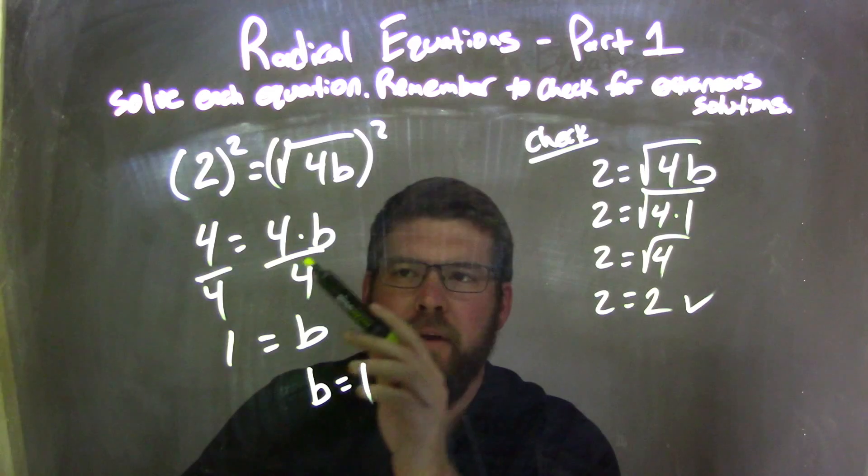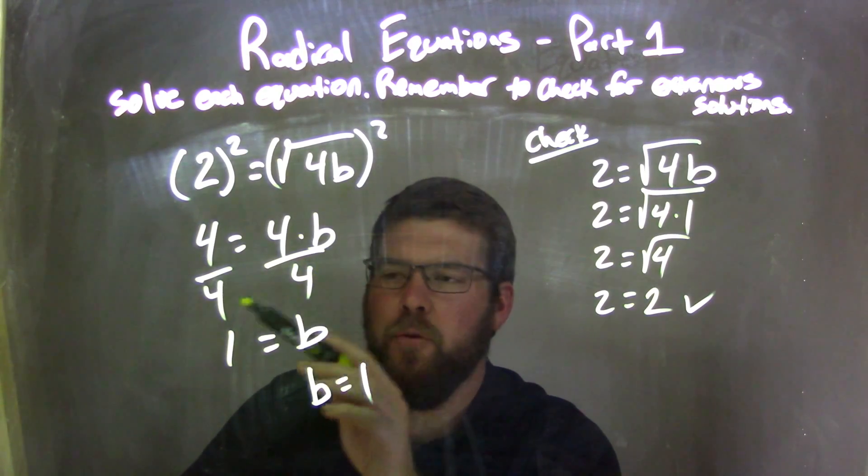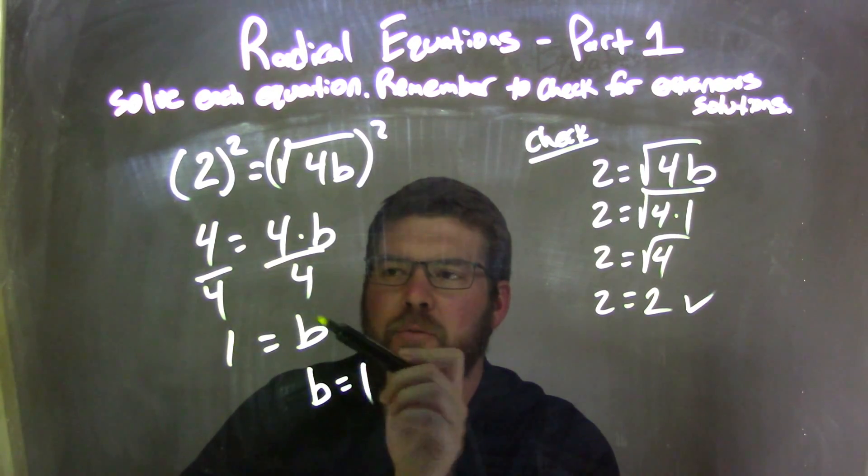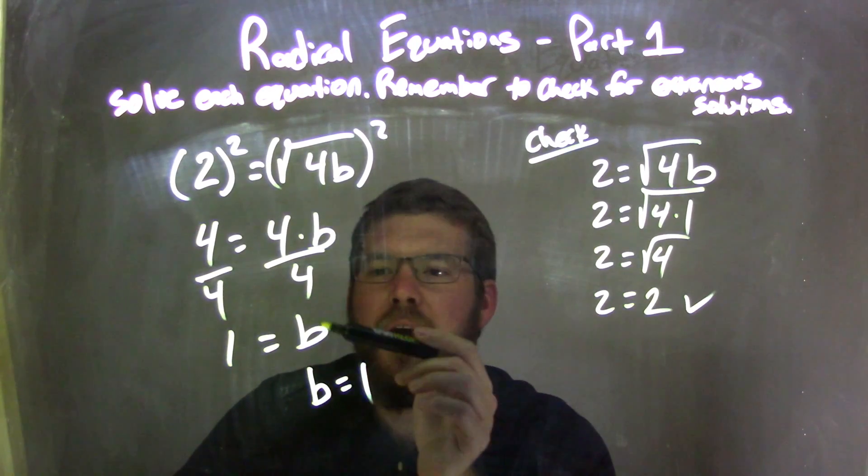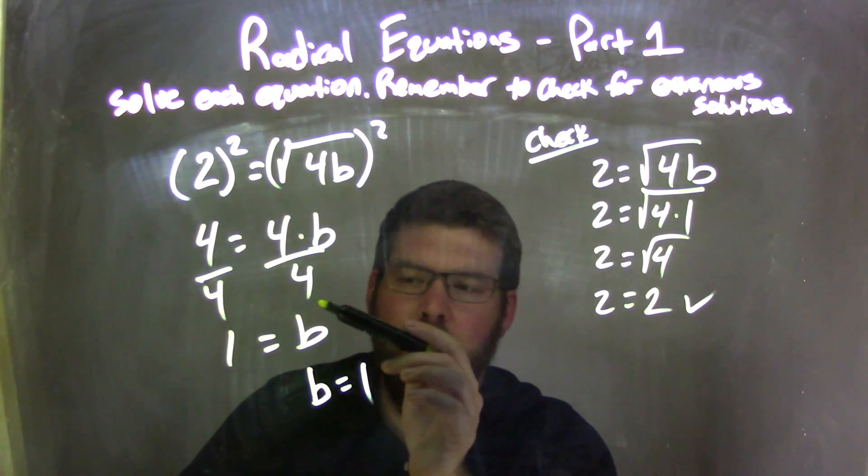I then divided by 4 to eliminate the 4 on the right, divided by 4 on both sides, leaving 1 equals b, because 4 divided by 4 is 1, and b was just here by itself, and now this 4 canceled out to be 1.